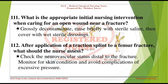What is the appropriate initial nursing intervention when caring for an open wound near a fracture? Grossly decontaminate, rinse briefly with sterile saline, then cover with wet sterile dressings. After application of a traction splint to a femur fracture, what should the nurse assess? Check the neurovascular status distal to the fracture and monitor for skin condition to avoid complications of excessive pressure.